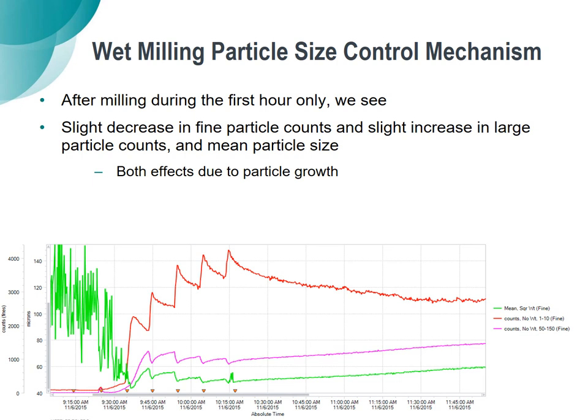We can also look at this visually with the particle size data trends. After that first hour, we see a decrease in fines and an increase in large particles, but if you look at the mean particle size count, it does not really increase all that much. This shows our particle size is really locked in fairly early in the process.